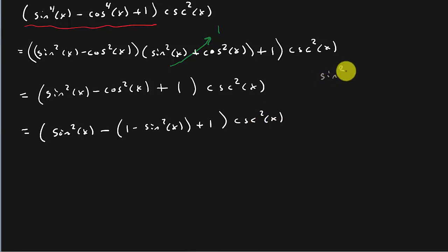So remember, sine squared plus cosine squared equals 1. So if I take this and move the sine squared over, I get cosine squared x equals 1 minus sine squared x. And so I just replace cosine squared with 1 minus sine squared. Don't forget to put it in parentheses because it's minus the whole thing.